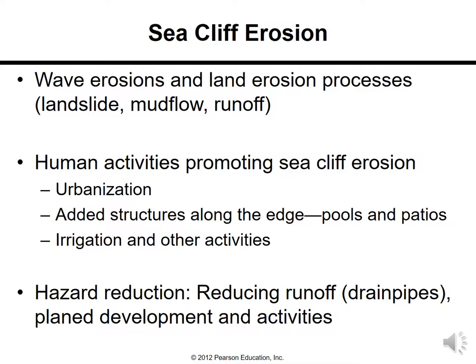Sea cliff erosion involves wave erosion and land erosion processes such as landslides, mud flow, and runoff. Human activities promote sea cliff erosion through urbanization — building structures along the edge like pools and piers — as well as irrigation and other activities that weaken the land. Hazard reduction involves reducing runoff and controlling planned development and activities.